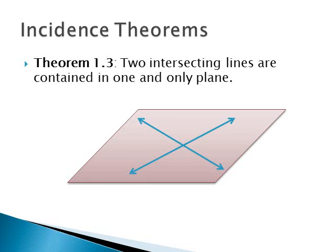The third one is two intersecting lines are contained in one and only one plane. So no matter where in space two intersecting lines are, there can be a plane that goes through both of them. Okay, think of an X in space. It makes a flat plane.